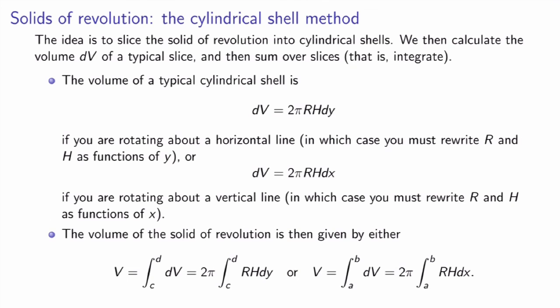To summarize the cylindrical shell method: slice the solid into cylindrical shells, calculate the volume of a typical slice as dv = 2πr · h · (width), then sum over slices by integrating. If rotating about a horizontal line, the width is dy and you rewrite r and h as functions of y; if rotating about a vertical line, the width is dx and you rewrite everything as functions of x. Then integrate dv over the appropriate variable.